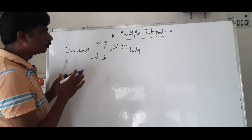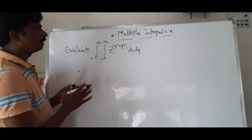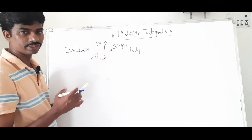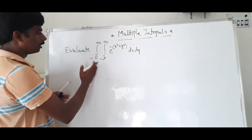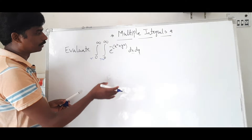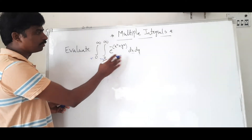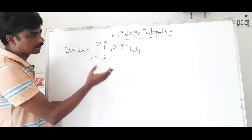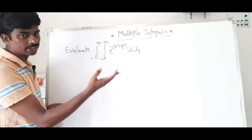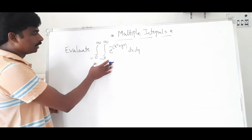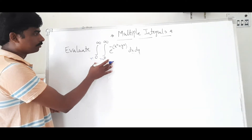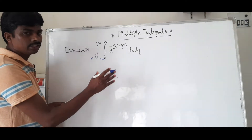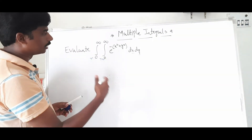Here we have two integrals. There is a change of order of integration. This is the Cartesian formula, and there is a change to polar coordinates. This is the same problem from our recent exam. First, we will do this in Cartesian and then we will do it in polar coordinates.